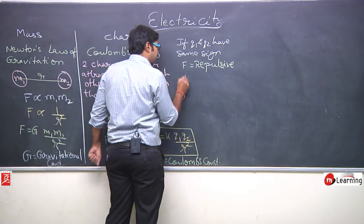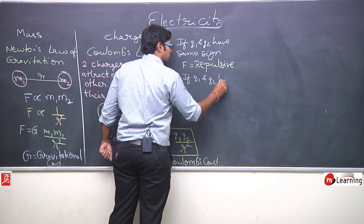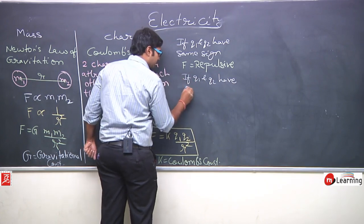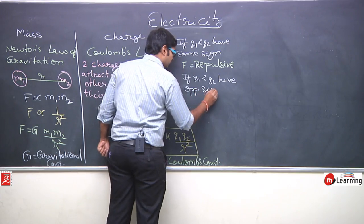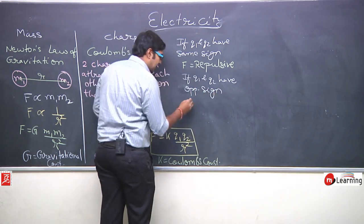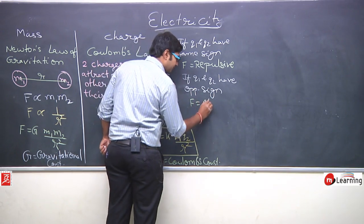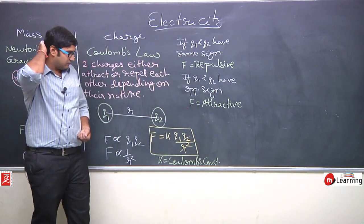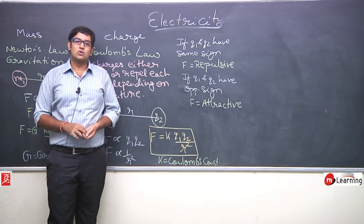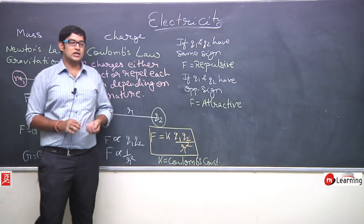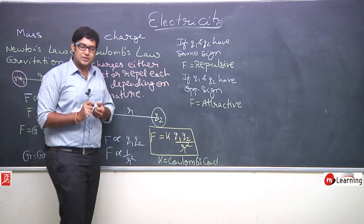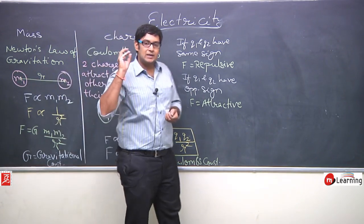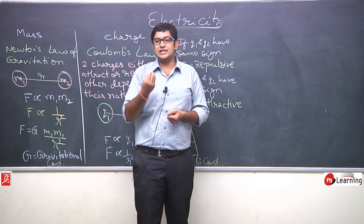Both Newton's law and Coulomb's law are universal laws. Wherever two charges are placed in the universe, the force between them is either attractive or repulsive, proportional to the product of charges and inversely proportional to the square of distance. Please remember this — questions are made on this.